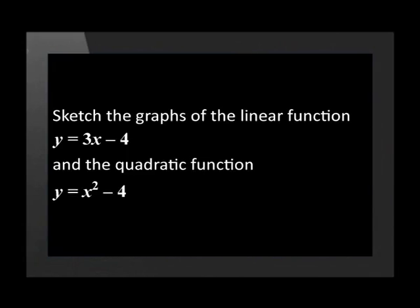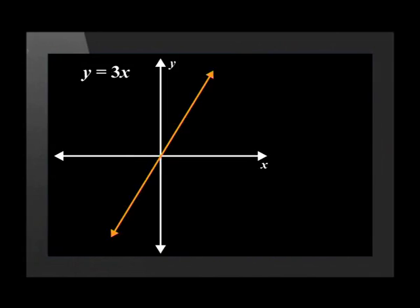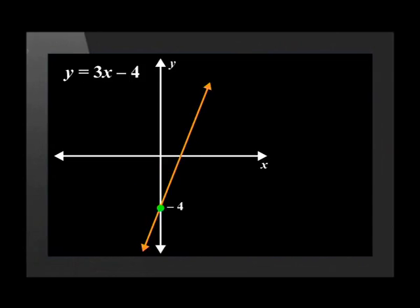Let's use this example: sketch the graphs of the linear function y equals 3x minus 4 and the quadratic function y equals x squared minus 4. We'll start with the graph of the linear function. We know that the parent graph of this function is y equals x. From the equation, we can see that the new graph has an a value of positive 3, which means the new graph will stretch vertically away from the x-axis. The q value is negative 4, which means the graph will move vertically down by 4 units — in other words, the new graph will have a y-intercept of negative 4.